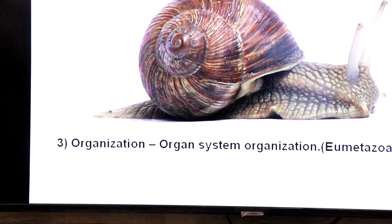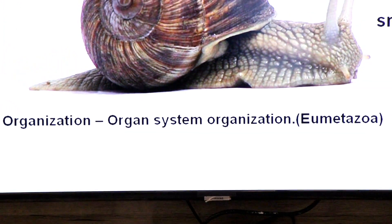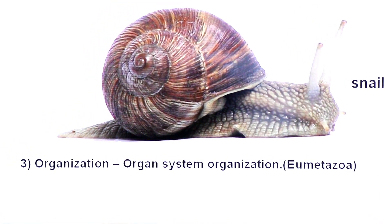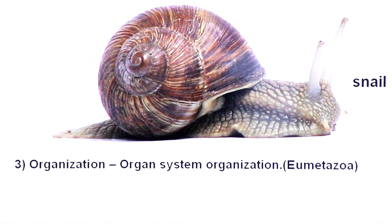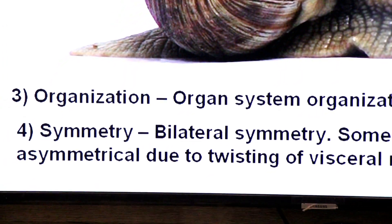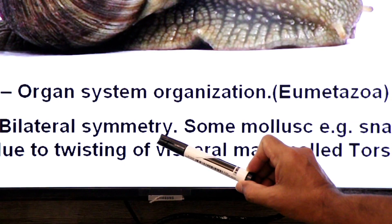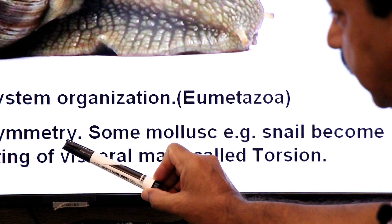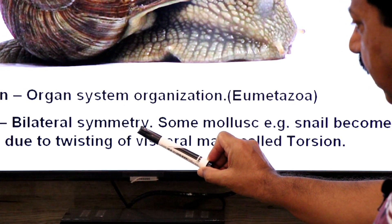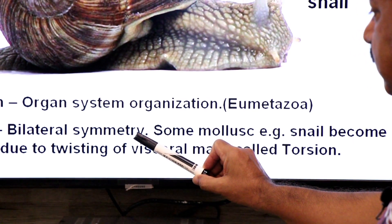The members of phylum Mollusca have organ system organization and they belong to the group Eumetazoa. Usually the members of phylum Mollusca have bilateral symmetry — two-sided symmetry. One is the right side and one is the left side when they are cut into two halves by one imaginary plane.